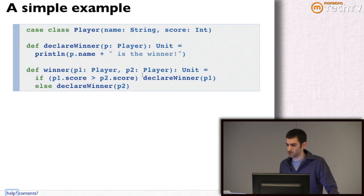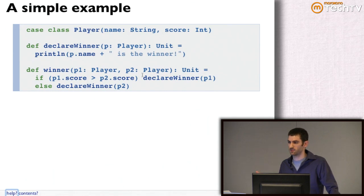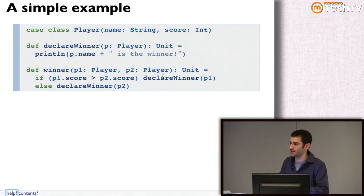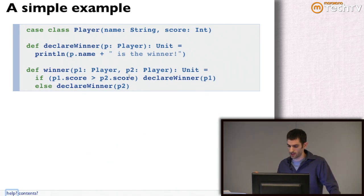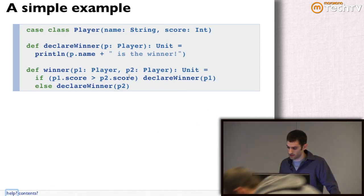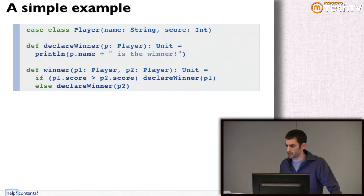One of the things I want to point out is that whenever you have imperative code like this, where there's a side effect occurring — in this case printing to the console — a lot of times there's a pure core hidden inside. If you look at the winner function, it's actually doing two different things: first there's logic for computing who the winner is, and second it has the side effect of displaying that winner. We can factor this code differently to reflect that intent.